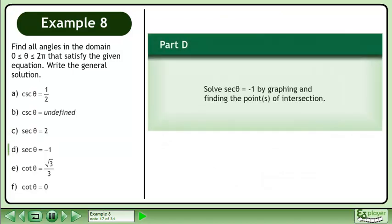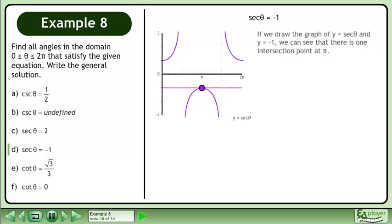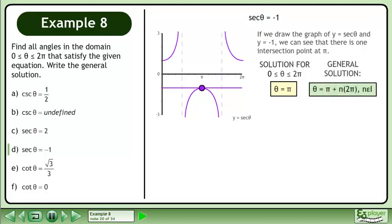In Part D, solve secant θ equals negative 1 by graphing and finding the points of intersection. If we draw the graph of y equals secant θ and y equals negative 1, we can see that there is one intersection point at π. The solution for θ between 0 and 2π is θ equals π. The general solution is θ equals π plus n times 2π, where n belongs to the set of integers.